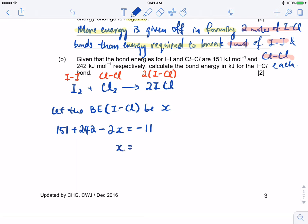We can write an equation where the energy required is 151 plus 242 minus away 2x will give us negative 11. From here, just need to solve for x. 151 plus 242 plus 11 is 404 divided by 2, equals 202. For bond energy, we do not need to write the sign. Therefore, the bond energy for ICl is 202 kilojoule per mole.